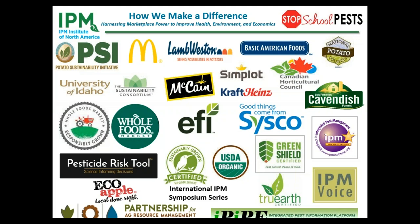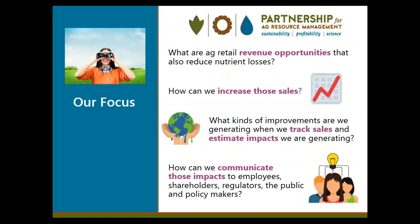IPM works with pest control companies, hospitals, schools, and other facilities in communities. We also work with food companies and farmers around the world to improve practices and performance, and to communicate those benefits to buyers and the public. Our goal with the Partnership for Ag Resource Management is to collaborate with ag retailers to identify and promote revenue-generating products and services that keep inputs on cropland. We track sales of these beneficial products and services through annual surveys and estimate reductions in nutrient losses that result from these sales. We then provide an individual nutrient stewardship report to participating ag retailers that compares location info with aggregate, state, and basin-wide data.